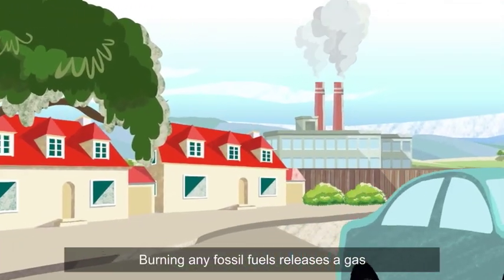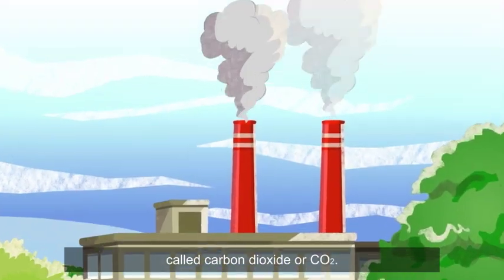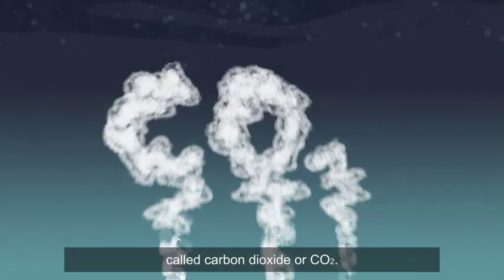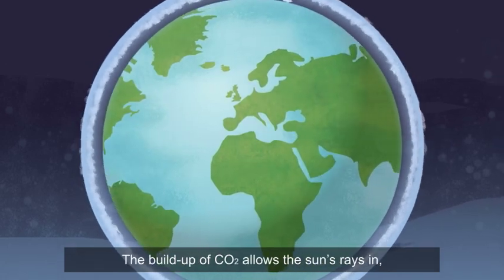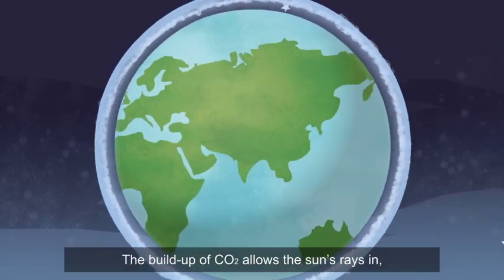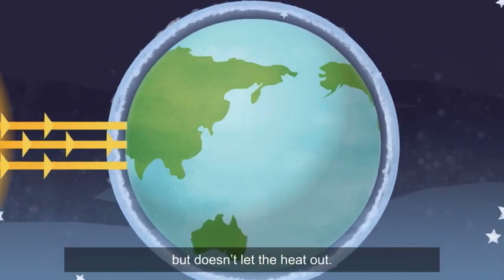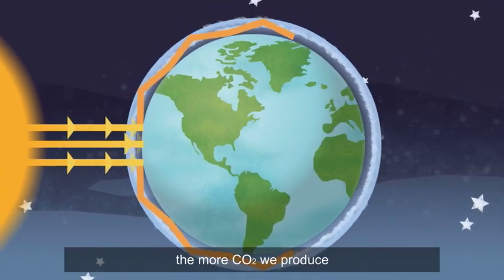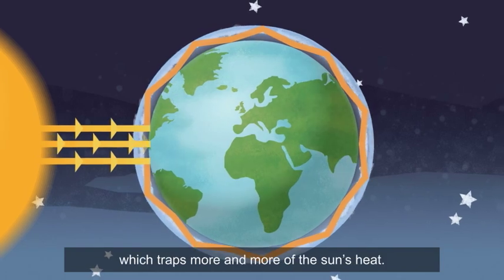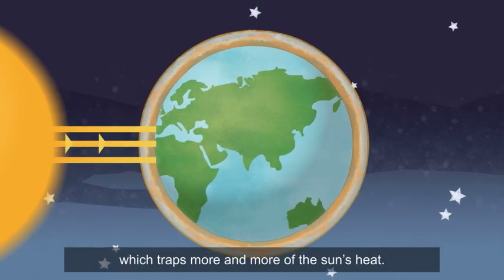Burning any fossil fuels releases a gas called carbon dioxide, or CO2. The CO2 gets trapped in the Earth's atmosphere. The build-up of CO2 allows the sun's rays in, but doesn't let the heat out. So the more fossil fuels we burn, the more CO2 we produce, which traps more and more of the sun's heat.